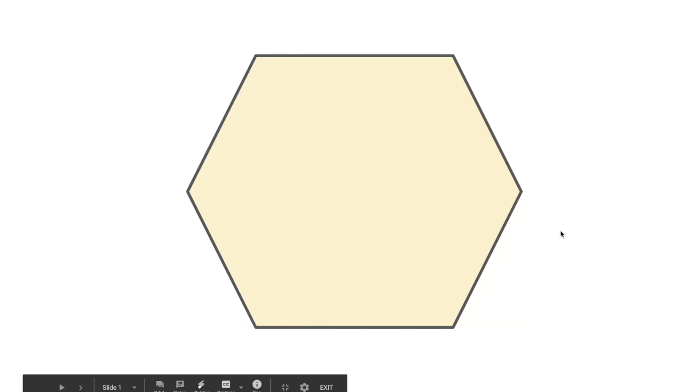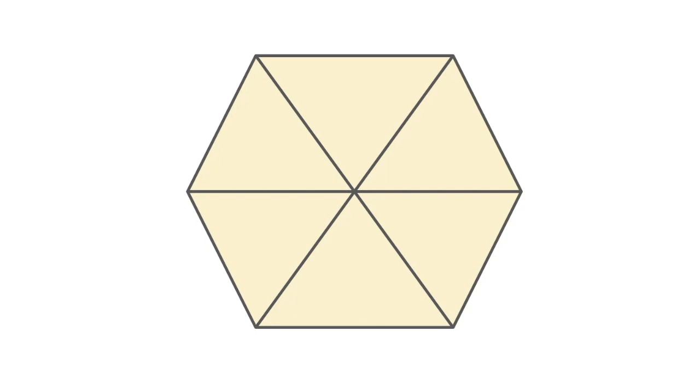Now if I draw in all the diagonals like that, I can divide this hexagon into one, two, three, four, five, six congruent triangles. Each one of these triangles has a really cool property. This segment, this segment, and this segment, all three of these segments are congruent. So it is an equilateral triangle. We know that every equilateral triangle is also equiangular, so every one of these angles is 60 degrees.